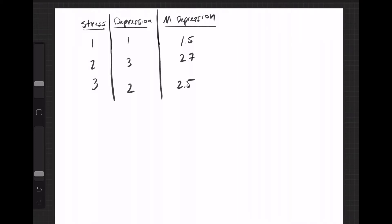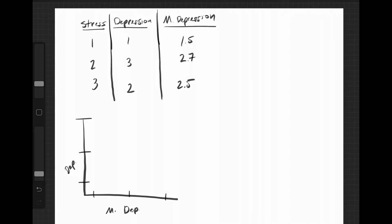One way we can conceptualize how to go about doing this is to think of a scatterplot. We are going to put mother's depression on the x-axis and then depression on the y-axis. So let's say we got 1, 2, and 3 here, and we can just plot this. What we're going to do is identify the coordinates of each of these. So we've got 1.5 on mother's depression and 1 on depression, which gives us a dot right there.